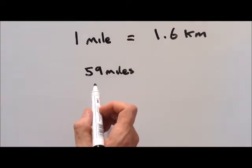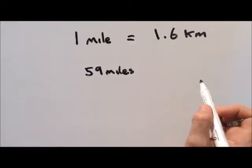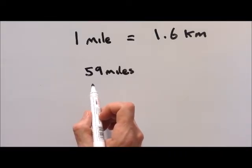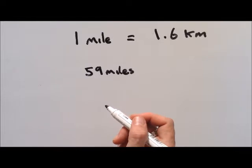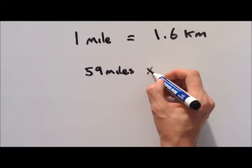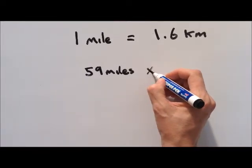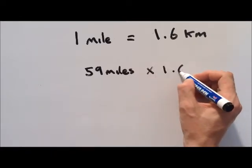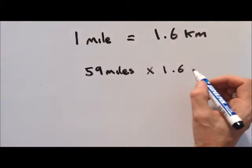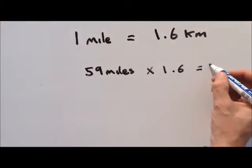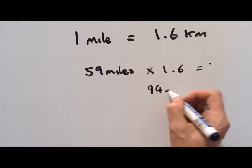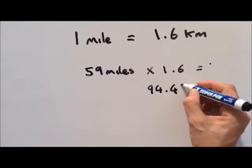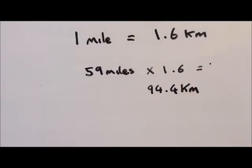Now we could divide this by 5 and then times it by 8 because it's over 5 miles. But another quick and easy way, and considering you'll have a calculator with you, is we just times this by 1.6, and then what you get is 94.4 kilometers. So 59 miles.